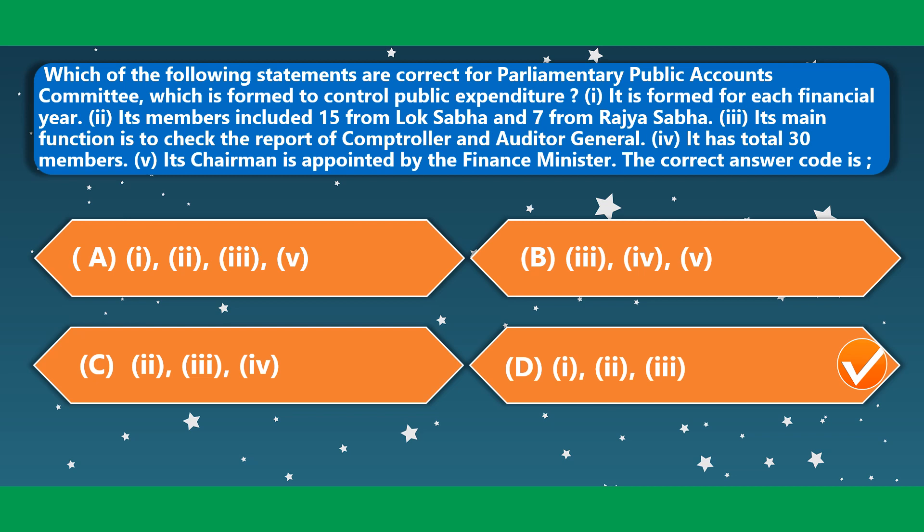Which of the following statements are correct about the Parliamentary Public Accounts Committee, formed to control public expenditure? It is formed for each financial year — correct. Its members include 15 from Lok Sabha and 7 from Rajya Sabha — correct. Its main function is to check the report of the Comptroller and Auditor General — correct. It has a total of 30 members — not correct. Its chairman is appointed by the Finance Minister — also not correct. The correct option is option D — statements 1, 2 and 3.